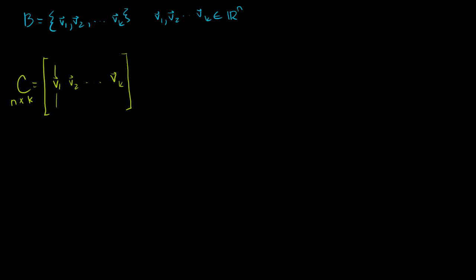If we have some vector A that is a member of Rn, and assuming that A is in the span of B, we can represent A as equal to the change of basis matrix times the coordinates of A with respect to our basis. If we have the coordinates of A with respect to B, we can multiply by the change of basis matrix to get vector A in standard coordinates, or vice versa.